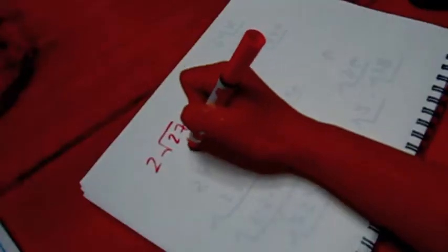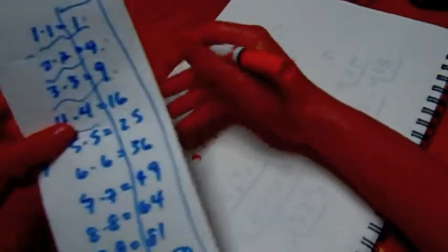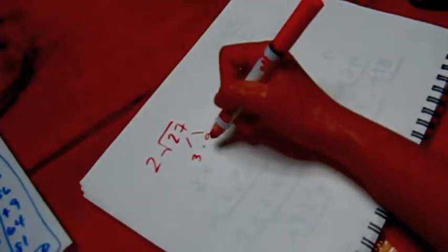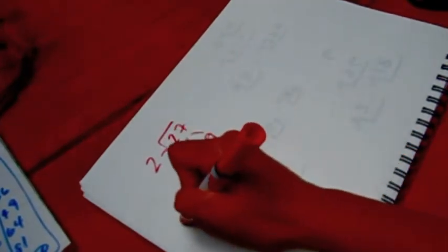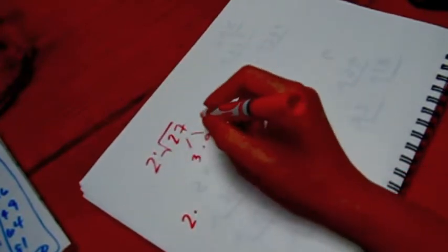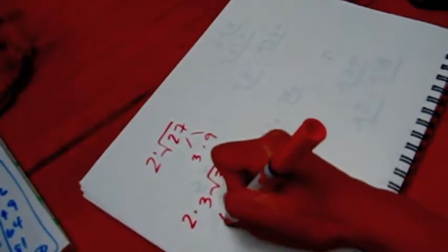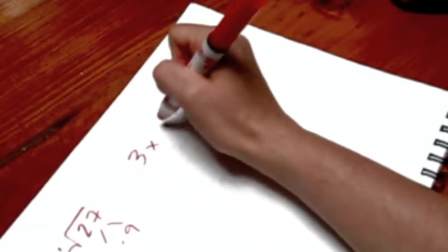Well, let's look at this one. We have 2 times the square root of 27. Again, 27 is 3 times 9, and 9 is on my list. So I can take the square root of 9, and it becomes 2 times the 3 that comes out, and then there's a 3 left inside, and 2 times 3 is 6.